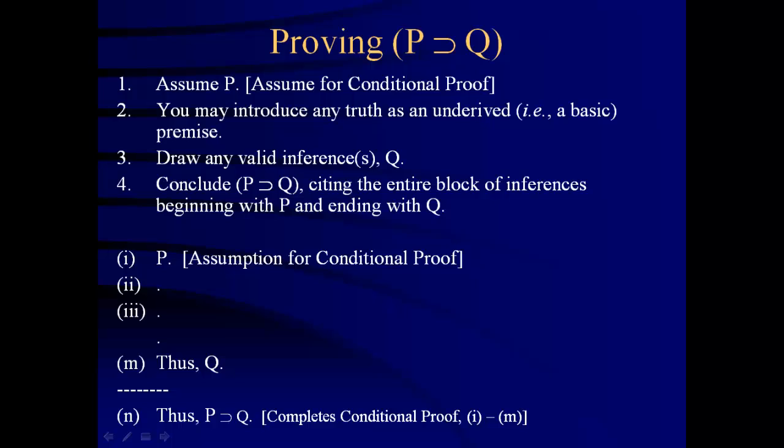There it is. This is the template for an extraction where you prove the conditional if P then Q. Notice the antecedent is the first line, and you flag it precisely this way. The consequent matches perfectly the last line before you derive. Along the way, you have two options within here. You can advance any truth you wish and cite it as underived or basic.